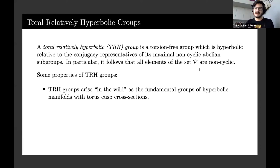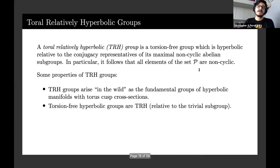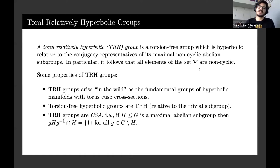Torsion-free hyperbolic groups are TRH relative to the trivial subgroup. TRH groups are CSA or conjugate separated abelian, which means that if you have a maximal abelian subgroup it intersects its conjugates trivially. TRH groups have JSJ splittings which I use in my research. I'm going to talk about what those are after briefly discussing splittings and graphs of groups.